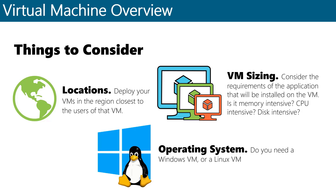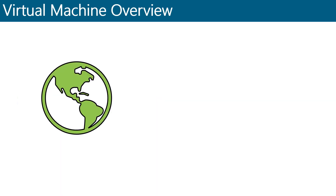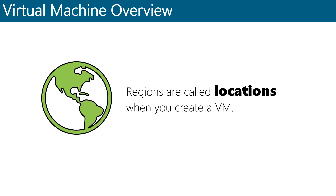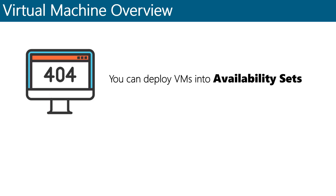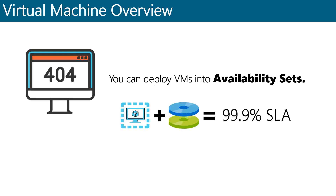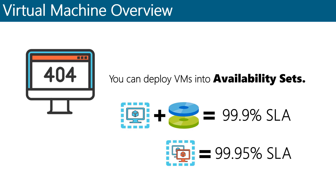Whenever you deploy a resource — be it a VM, virtual network, or whatever the resource may be — that resource can be deployed into any one of many geographical regions around the world. These regions are called locations when you create a VM, and they specify where the virtual hard disks for the VM are stored. When you deploy a VM, you'll have the option to deploy into an availability set. Although the Azure SLA for a single VM is 99.9% if you deploy with premium storage, deploying two or more VMs in an availability set qualifies you for an improved 99.95% VM SLA.